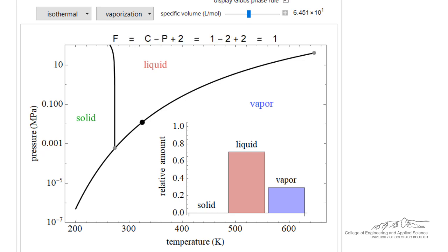And if we click the box, it shows the phase rule. We only have one degree of freedom. And we picked the one degree of freedom because we picked the temperature to carry out this isothermal process.